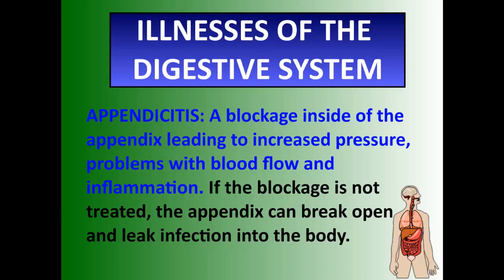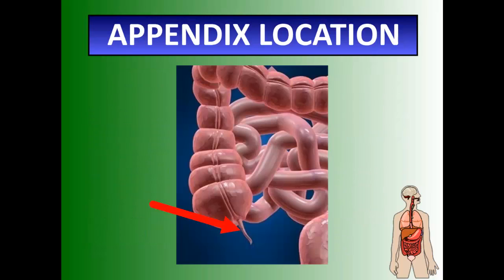If you get sick, there are many things that can go wrong. One is appendicitis — a blockage inside the appendix, a very small organ on the side of the large intestine. This blockage can be due to increased pressure, problems with blood flow, or inflammation. If not treated, the appendix can break open and become very dangerous. As soon as it's identified, they rush in and take it out.